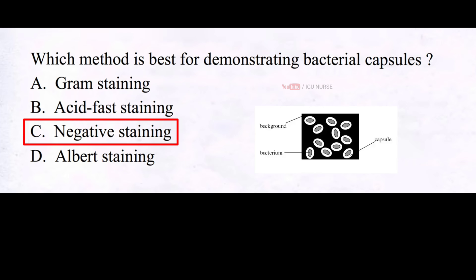The best method for demonstrating bacterial capsules is negative staining. Negative staining is very useful because it outlines the capsules without harming the bacteria, and doesn't require heat or chemicals that can destroy the delicate capsules.